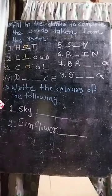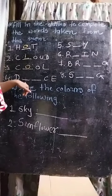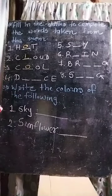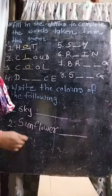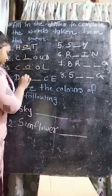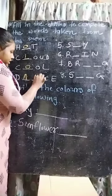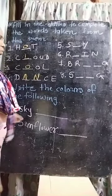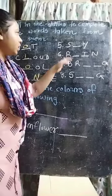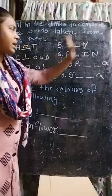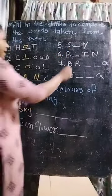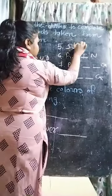Now fourth one: D_D_C_E. Which word is this? In the poem - dance. D-A-N-C-E. Dance. Now fifth one: S_D_C_Y. Which word is this? Sky. S-K-Y. Sky.